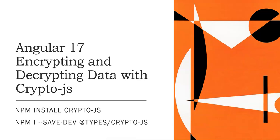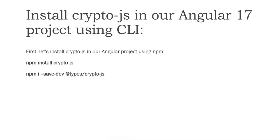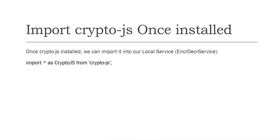First, we need to install CryptoJS using the npm command, and after that we'll use the save-dev types. As you can see, the commands in the first step install CryptoJS using the CLI command. These commands will help us to install CryptoJS.